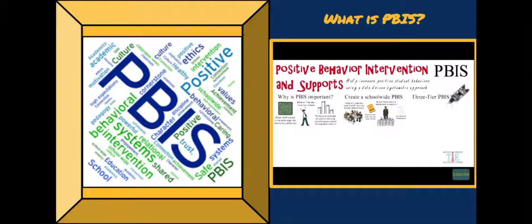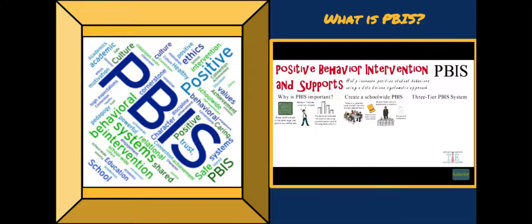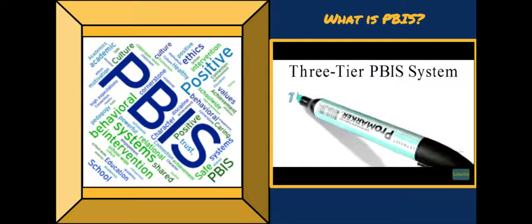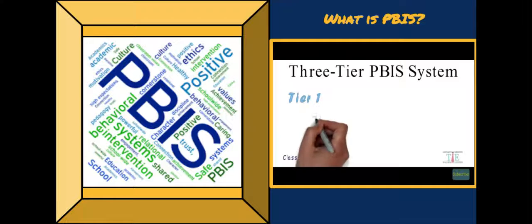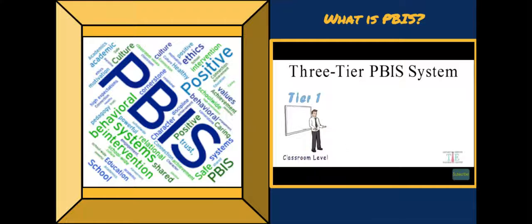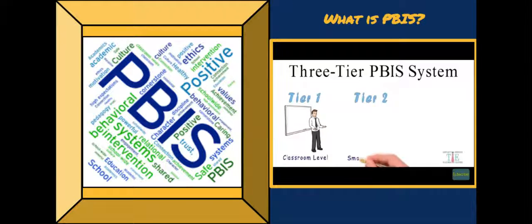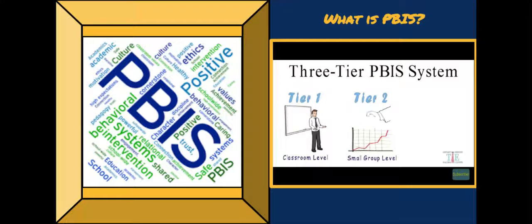Some schools will incorporate a three-tier system for PBIS. Tier one intervention is generally focused at the classroom level — schools must ensure that students are receiving proper instruction. In tier two, students that need further behavior supports are often worked with in small groups. These students are identified through data collection processes, and the small groups work on learning social skills.